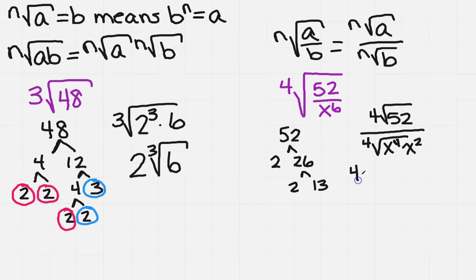So on top, this hasn't changed. It's still the 4th root of 52. Now I'm going to have x times the 4th root of x squared. Oh no. Now I've got something in the bottom that's got a radical. So that means I'm going to have to rationalize this.